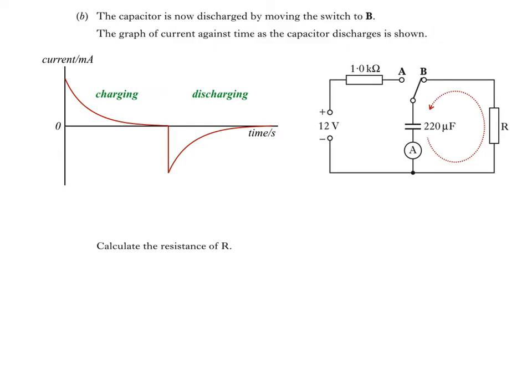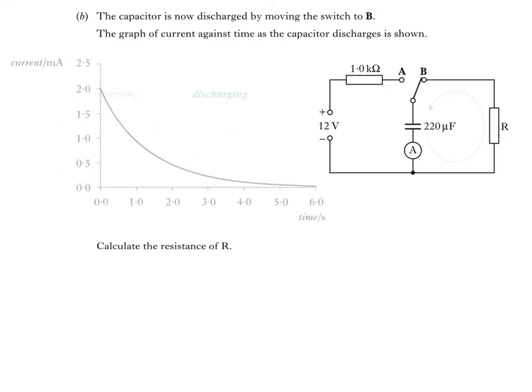In this question the graph only shows current against time as the capacitor discharges. Because of that it doesn't need to be drawn as negative to indicate that the current during discharge is in the opposite direction to charging. Answering this question is actually straightforward. We just use Ohm's law.